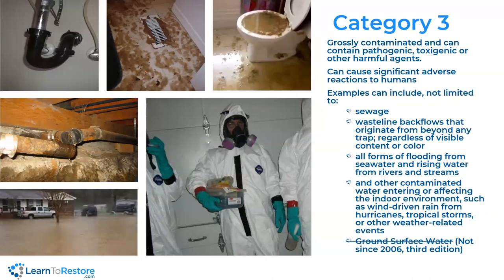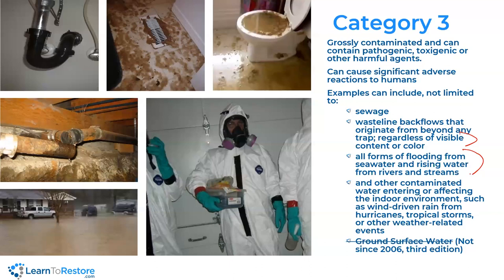Category three also includes all forms of flooding from seawater, rising water, rivers, and streams. Usually by the time a river overflows, the sanitary sewer system in the community is also overwhelmed and it's all mixing together — it's a big disgusting mess. Even though a house with full-on sewage backup might smell worse than a river overflow, the river overflow has everything and more. You'll run into a lot of jobs where the question is not 'is sewage category three?' but rather 'is that really sewage — did it come from beyond the trap?'